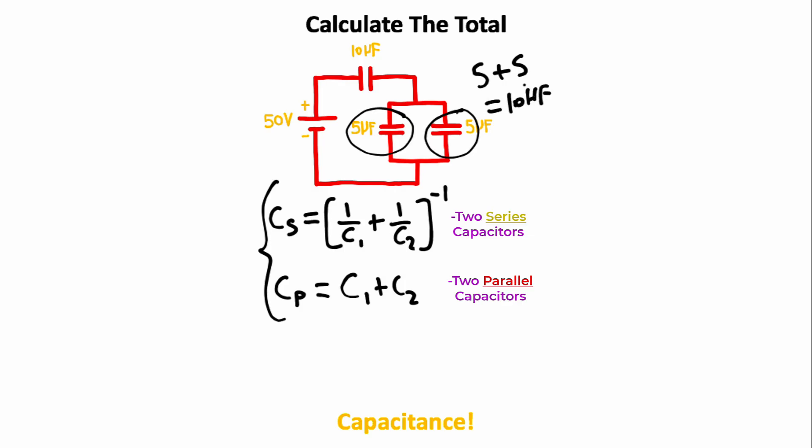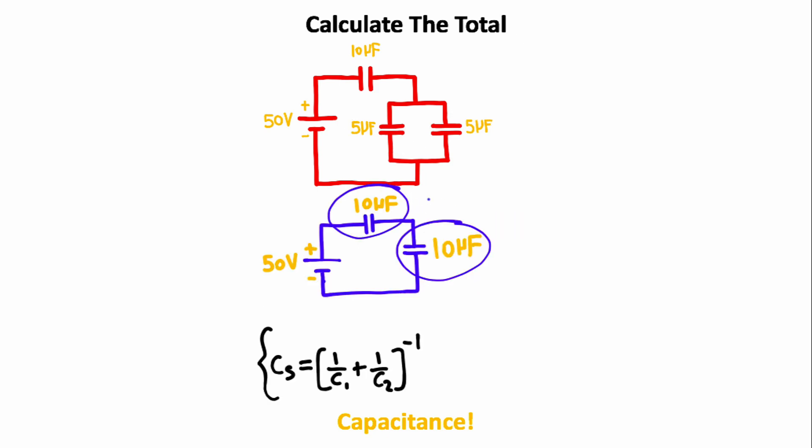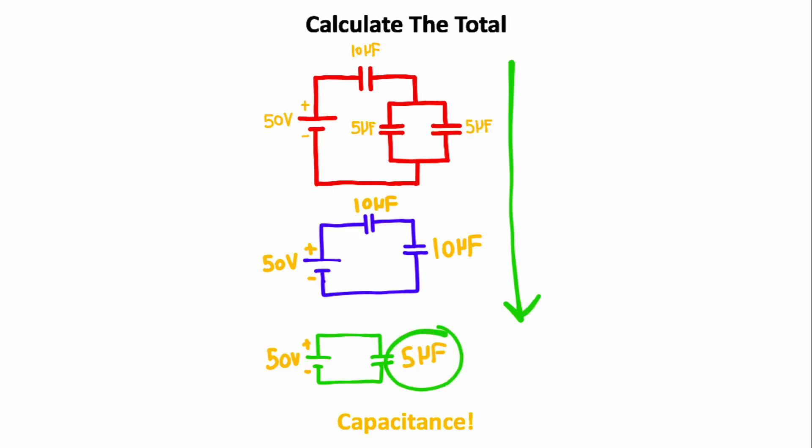Now we have two capacitors that are in series, which means I can go ahead and use the series equation. The first capacitor that I see is 10 microfarads. The second capacitor is also 10 microfarads. 1 over 10 plus 1 over 10 should give you 2 over 10, and if you flip that fraction or take the inverse, you should get 5 microfarads. So we have broken this circuit down to a single 5 microfarad capacitor. 5 microfarads is the total capacitance, and that's how you can analyze capacitor circuits.